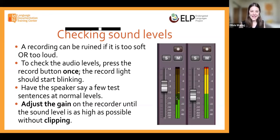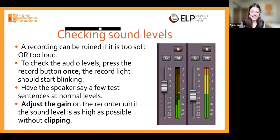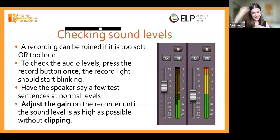Ask your speaker to start saying some test sentences. As that happens, little green bars are going to jump up and down in response to the speaker's voice. When they speak louder, those bars will extend higher; when they're softer, they go down. Your goal is to have the green bars be as high as they can be without clipping. If the green bars go off scale, they'll start turning yellow, then orange, then red — that's called clipping, meaning you've exceeded the recorder's capacity to capture that sound. Extending into the yellow is okay, but avoid the orange and red.